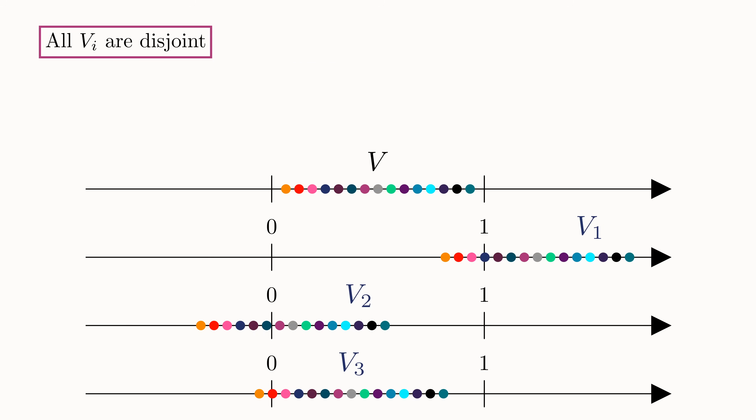The second key result we need is that every single number in the unit interval is in one of these VIs. We can see this as follows. Take any number X in the unit interval. In our initial construction of V, we placed every single point into different colored boxes, so X must be in one of them.